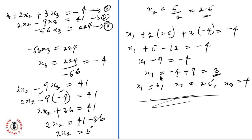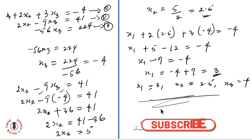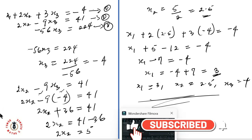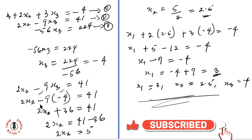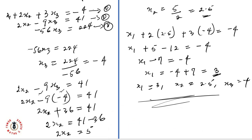So x1 equals 3, x2 equals 2.5, and x3 equals minus 4. I hope you further understand how to use the Gaussian elimination method. If you are yet to hit the subscribe button, kindly do — that way you'll be telling YouTube you love what we're doing and encourage us to do more. Thank you, and see you in our next class.